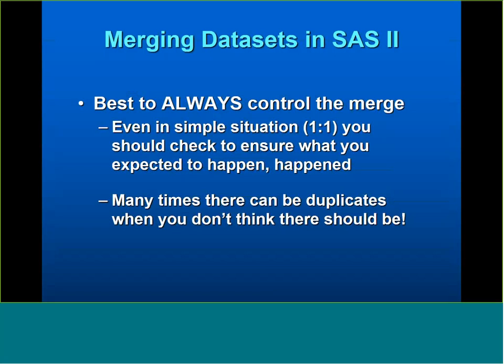Coming back to merging data sets in general: the best way to think about merging is that you always want to control the merge. Even in the simplest one-to-one situation, you want to check and ensure that what happened is what you expected. You should have a pre-existing idea of what should happen, check to make sure it did. I always control every merge — there are often duplicates where I don't expect them, which requires investigation.